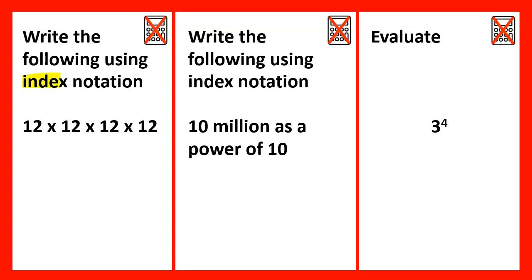Write the following using index notation: 12 times 12 times 12 times 12. 12 is the base number which has been multiplied by itself, itself, and then itself again, meaning that this would be 12 to the power of 4.